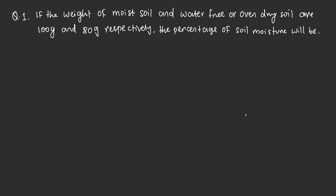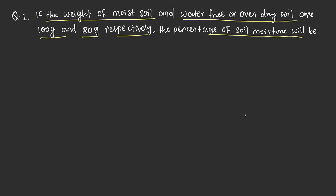The first question is: if the weight of moist soil and oven dry soil are 100 g and 80 g respectively, what is the percentage of soil moisture? Whenever we try to find out the moisture content of soil, there are two broadly different types of methods — one is the direct method and another is the indirect method of soil moisture measurement.